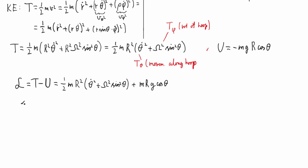From the Lagrangian, we can then calculate a generalized force. I'm going to give that a name because we're going to use it later: Q_theta — the generalized force associated with the theta direction — because that's the only variable that survives after we've applied the constraints.